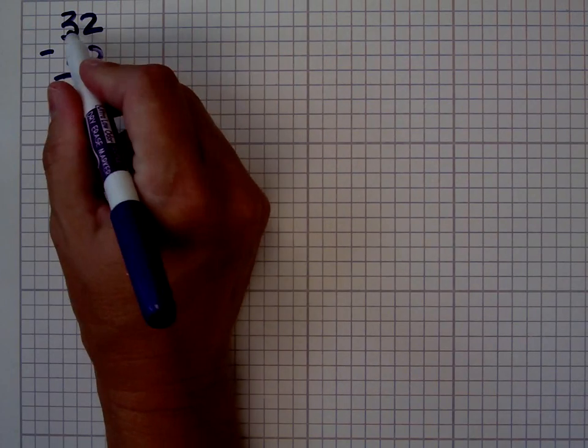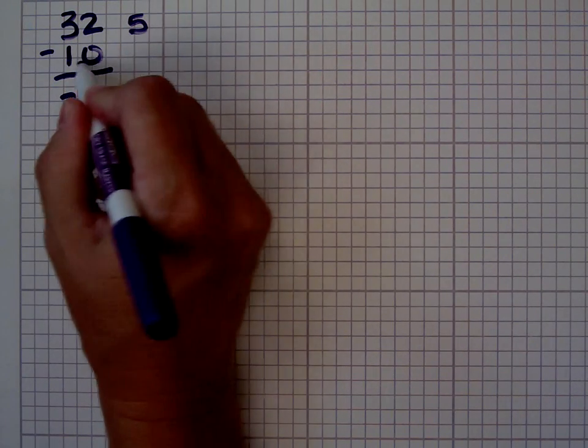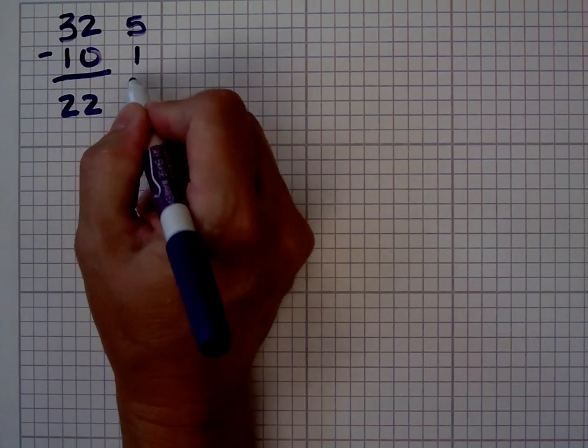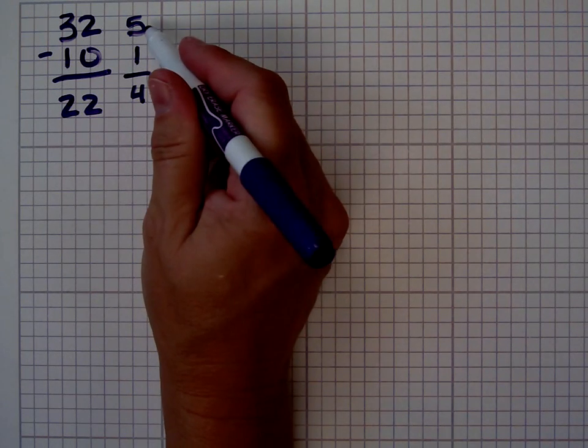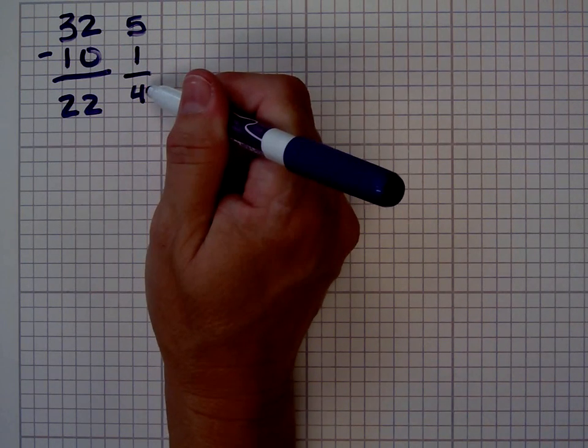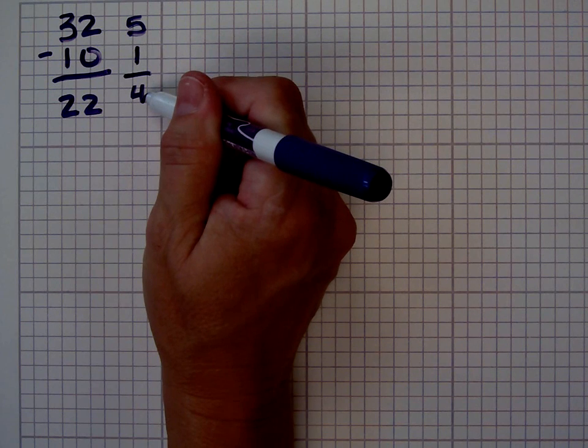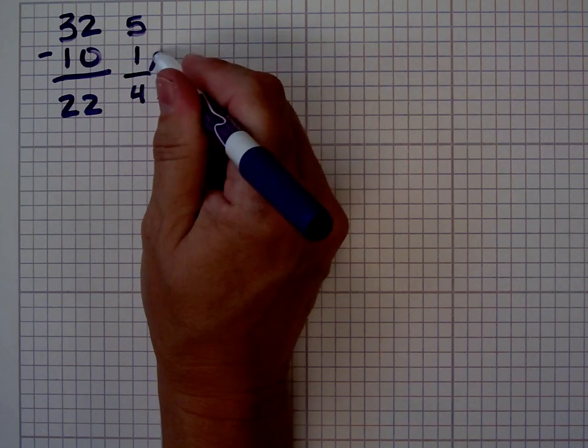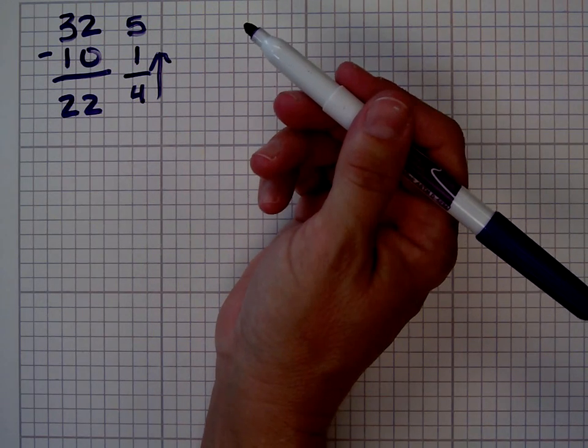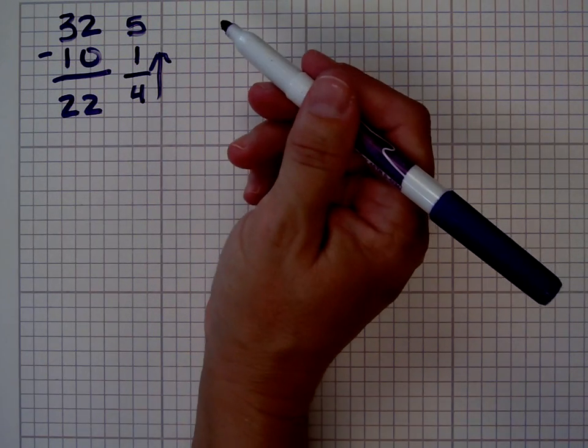Let's check with digital roots. 3 plus 2 is 5, 1 plus 0 is 1, and 2 plus 2 is 4. I want to caution you against simply saying 5 minus 1 is 4, and instead want to encourage you to say 4 plus 1 is 5. Work from the bottom up when checking a subtraction problem using the digital root.